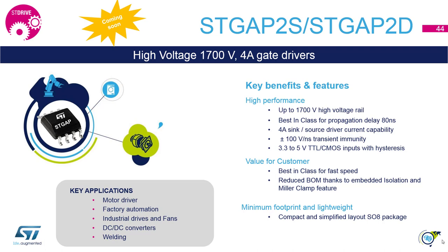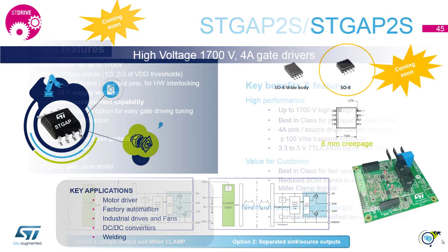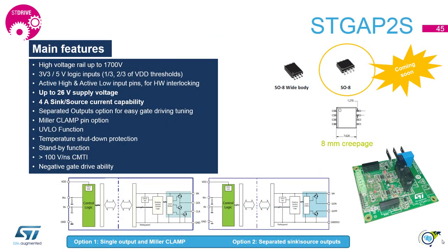Remarkable CMTI immunity of at least 100 V/ns. The STGAP2S is a gate driver for a single switch. It features isolation up to 1.7 kV and is available in two configurations: either single output with Miller Clamp functionality, or separated sink and source outputs for optimized turn-off and turn-on. The devices are suitable for negative gate driving to increase robustness against accidental turn-on during commutation. Minimum 100 V/ns CMTI is available here too.